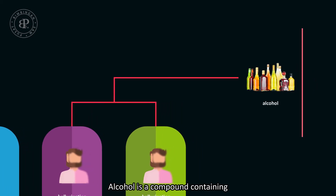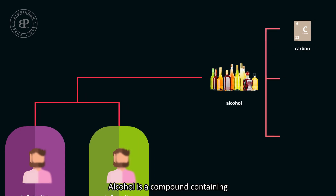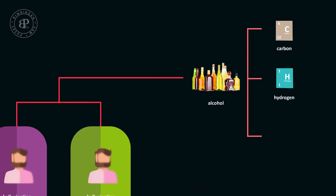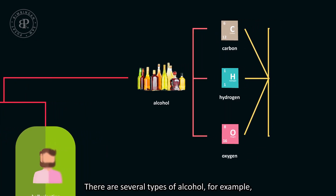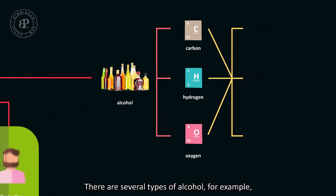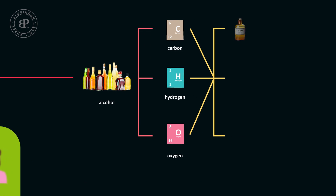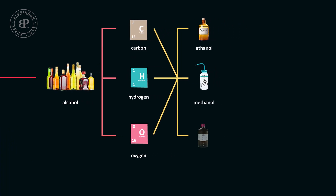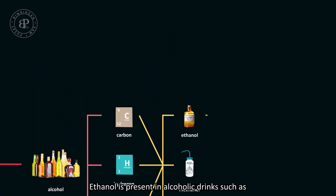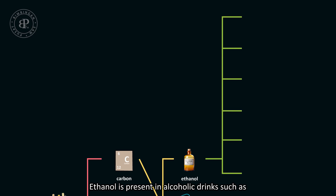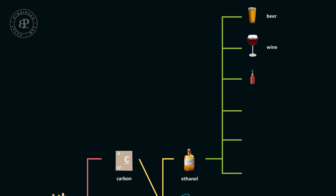Alcohol is a compound containing carbon, hydrogen, and oxygen. There are several types of alcohol — for example, ethanol, methanol, and propanol. Ethanol is present in alcoholic drinks such as beer, wine, brandy, whiskey, vodka, and rum.